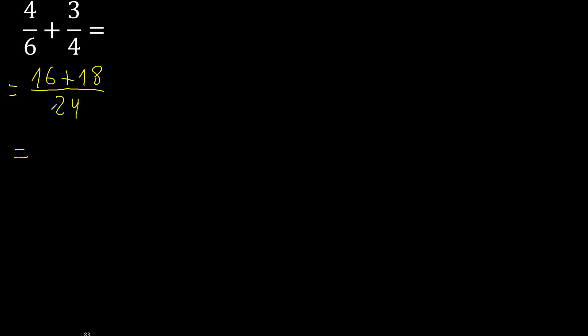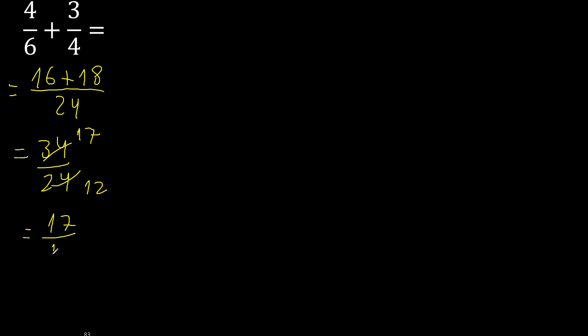34 can be simplified because it can be divided by the same number. Divided by 2, divided by 2 is 17. 12 cannot be simplified.